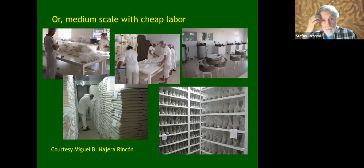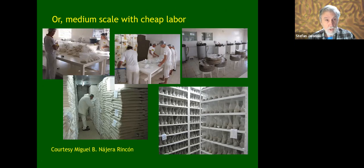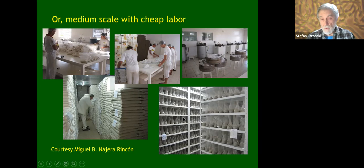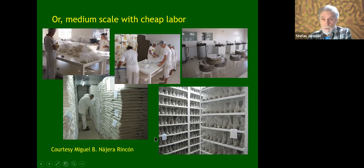The medium scale: this is in Brazil — a former company called Itaforte, now owned by Koppert. You can see employees processing bags of rice, sterilizing them, inoculating them. This is the fermentation room — it looks like a library, except instead of books you have bags of Beauveria. And these are the raw ingredients: the rice used as substrate.